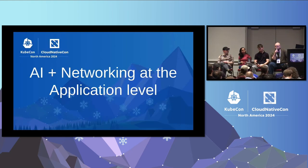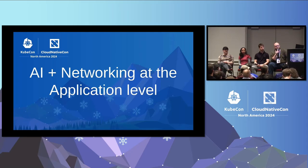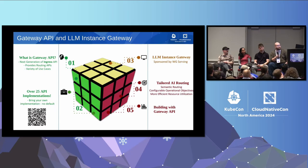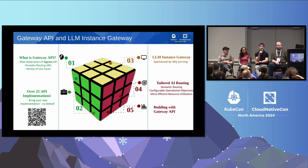That's a bit of what's going on at the infrastructure level when you're doing training and inference workloads and need to get resources for them, in particular networking resources. We also have some things going on at the application level — we're doing things with inference-based routing and Lior will tell us a little bit more about that. I'm going to talk about Gateway API and the LLM Instance Gateway which helps with that.